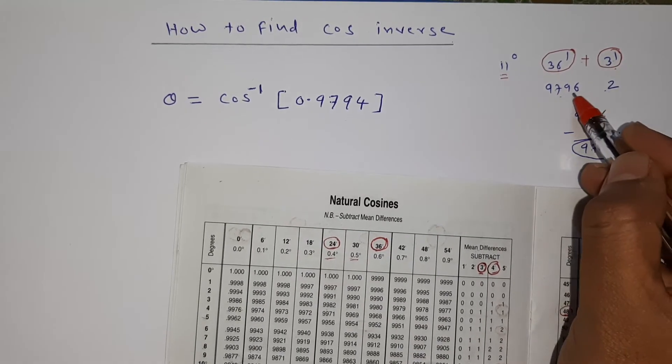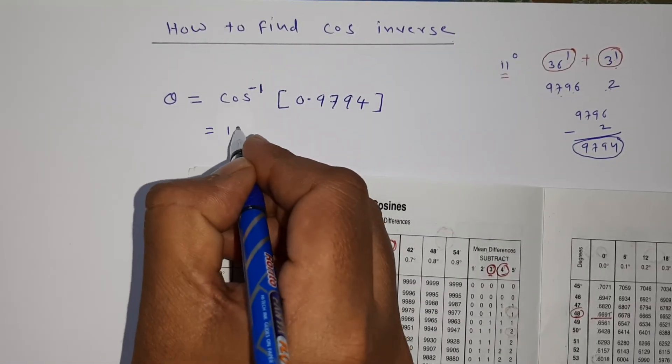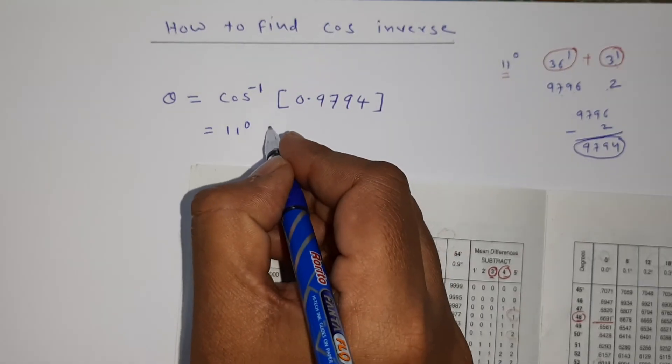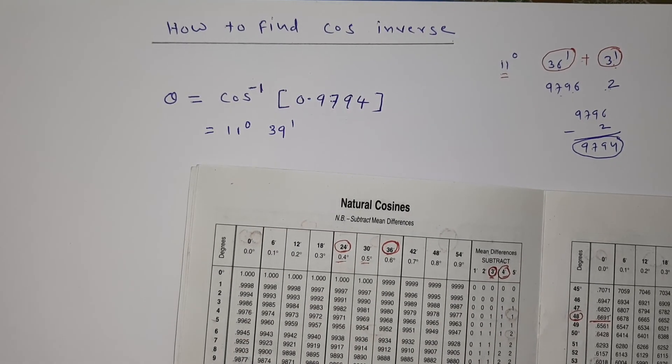We got this value in 11 degrees 36 minutes and then 3 minutes. This minutes we have to add. This value has to only be subtracted. So we got this answer as 11 degrees 36 plus 3 minutes, that is equal to 39 minutes. Thank you students.